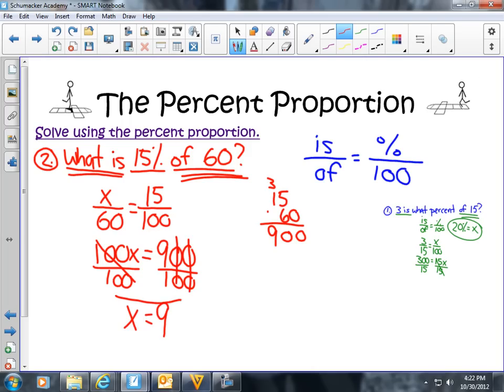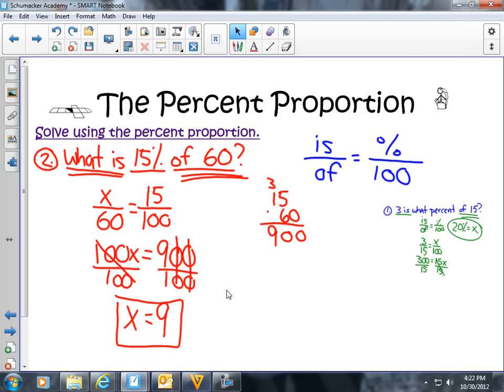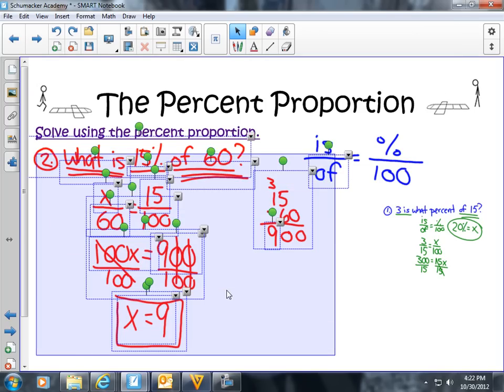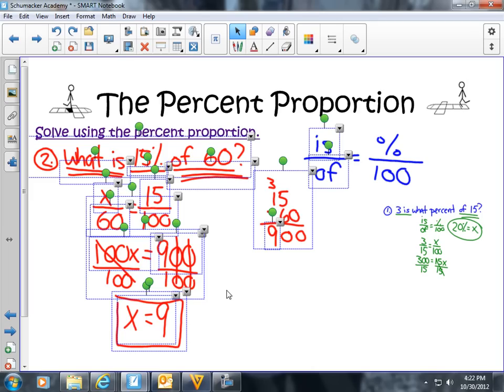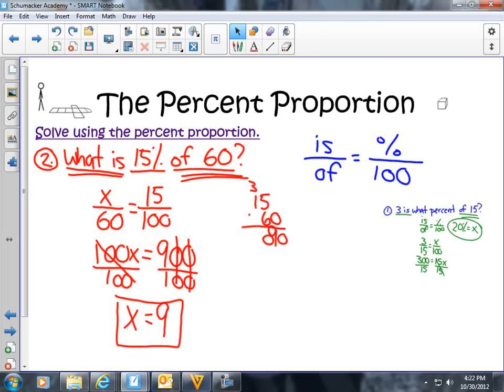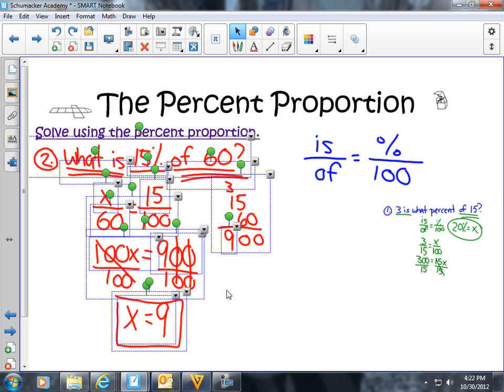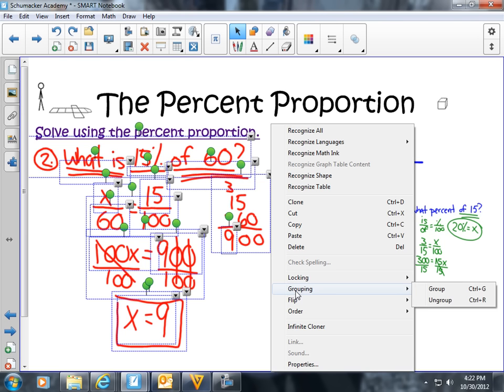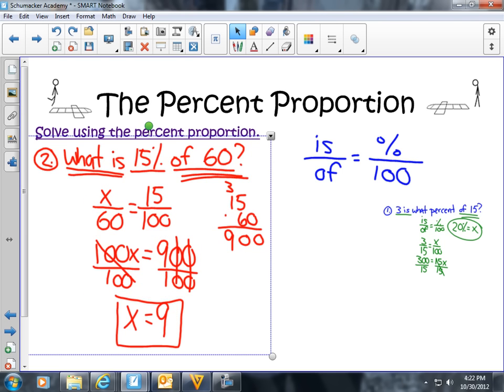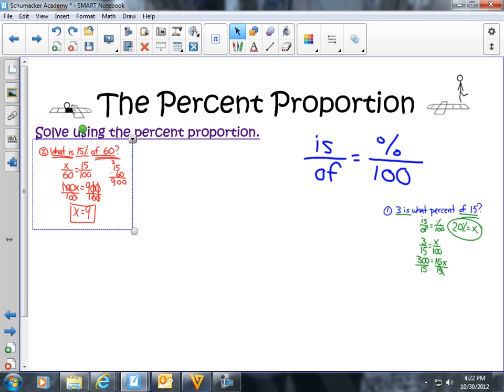And it's not a percent, it's just a number. So x equals 9. Hopefully that made sense to you. That is when we are going to try to find a percent of a number. We're given the percent, we're trying to find out what that number is. We'll do one more example, and hopefully that will be enough to help you understand how to do these percent problems.